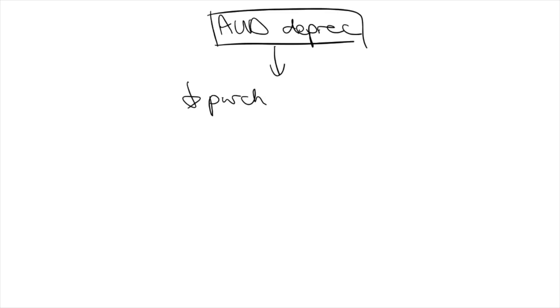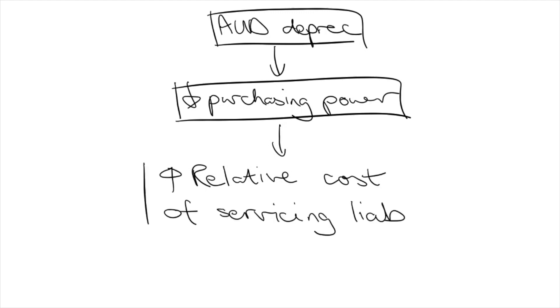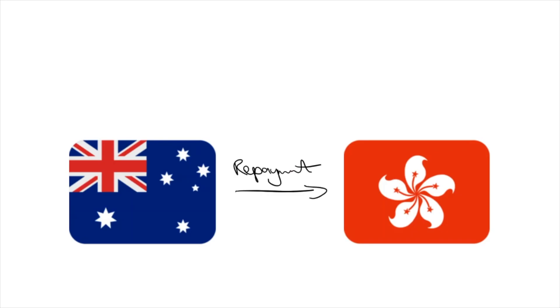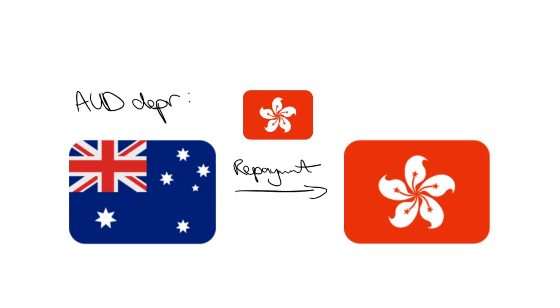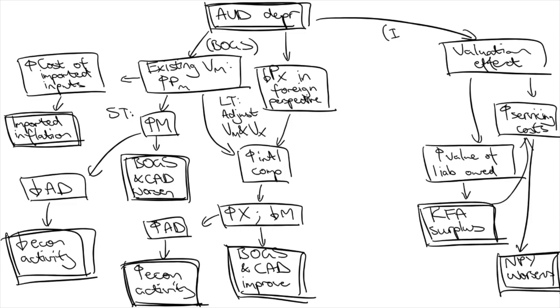The second set of impacts is more focused on investments and servicing costs. A depreciation means that we have decreased purchasing power, which causes the relative cost of servicing liabilities to increase. For example, imagine if I owe a loan to Hong Kong and it requires me to pay 100 Hong Kong dollars every month. If the dollar depreciates, that 100 Hong Kong dollars interest would appear more to me. This change in relative value of debt servicing costs and the debt itself is called the valuation effect. Therefore, a depreciation can cause a greater KFA surplus and an NPY deficit.